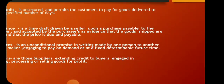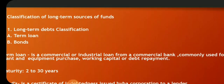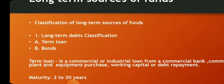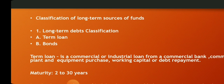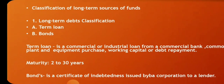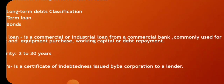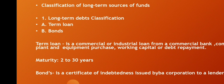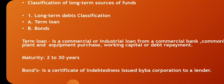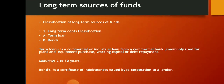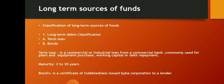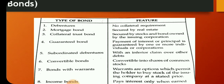Long-term sources of funds are classified as either a term loan or advance. A term loan is a commercial or industrial loan from a commercial bank, commonly used for plant and equipment purchases, working capital, or debt repayment. The maturity of term loans is typically 2 to 30 years. A bond is a certificate of indebtedness issued by a corporation to the lender. Please be familiar with these terminologies.